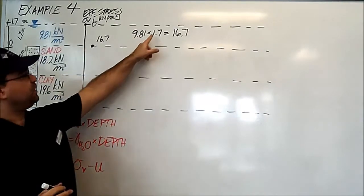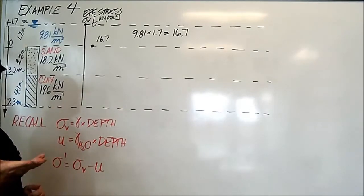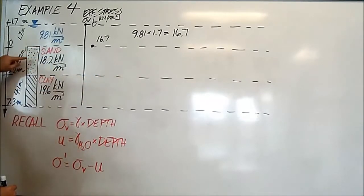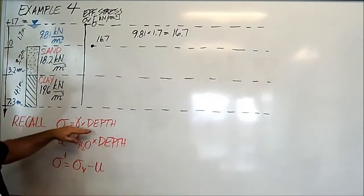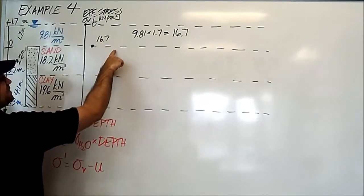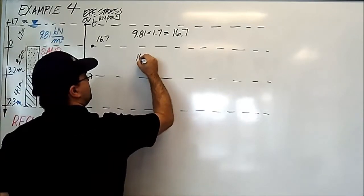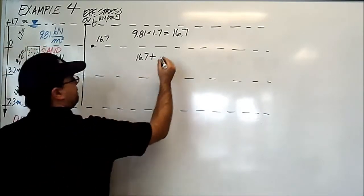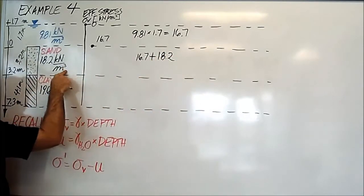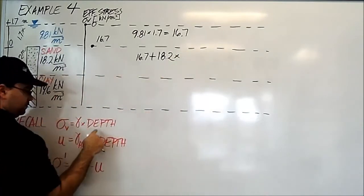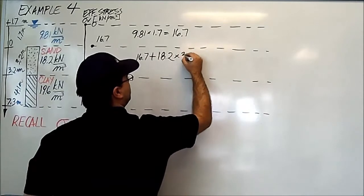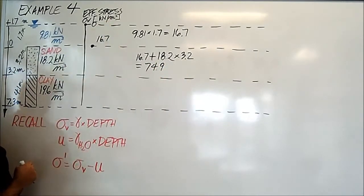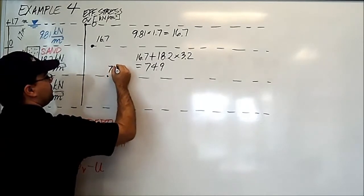As usual, I'll be deleting these calculations in the interest of clarity and making it look a little nicer. But the beauty of the video, you can pause, rewind, and go check out. Next, at this interface where saturated sand gives way to clay, we're going to calculate the vertical stress. It is the stress above here, so that is 16.7 kilonewtons per square meter, plus the density of this sand, 18.2 kilonewtons per cubic meter, times the depth. This depth is 3.2. This number is 74.9 kilonewtons per square meter.